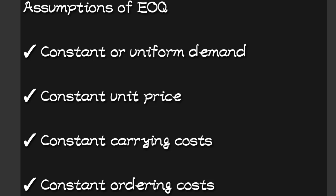The EOQ also assumes constant carrying costs — that the cost of maintaining a certain level of inventory is always the same. In reality, unit carrying costs may vary depending on the size of the inventory and what is being stored. It also assumes constant ordering costs, whereas the actual cost of ordering and receiving items varies depending on what is ordered, from where, and when.